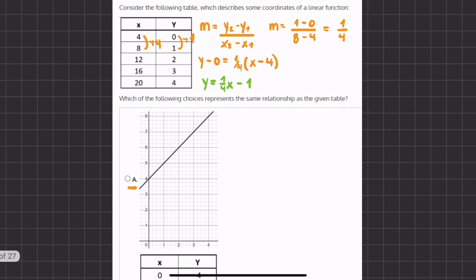Alright, so if we take a look at our graph, the best way to see if this graph correlates with our table, we can pick a point on the graph and see if it correlates with our function. So if we pick our first point, (0, 4) in our given table, we can try and see if we can find this point on the graph.